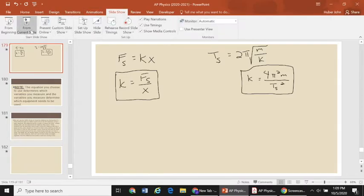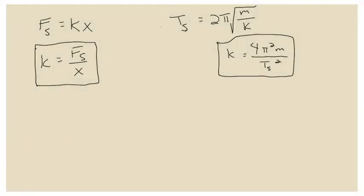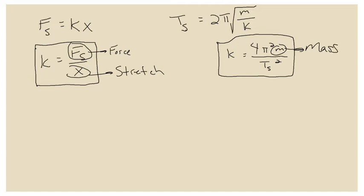In our lab, we have devices called force meters, so you can measure the force using a force meter, and x is the amount the spring stretches — you can measure that with a meter stick. For the period equation, 4 and pi are constants, but the mass attached at the end of the spring can be measured with a triple beam balance or a digital scale. The period T is a time measurement, which can be measured most obviously using a stopwatch.